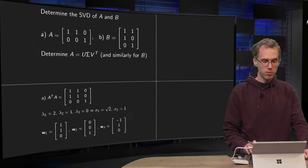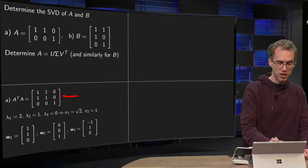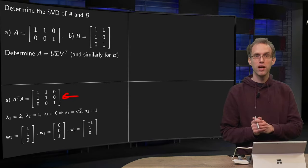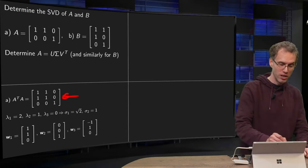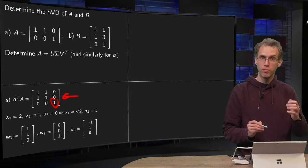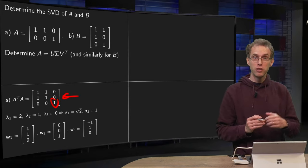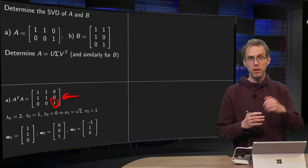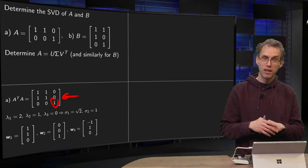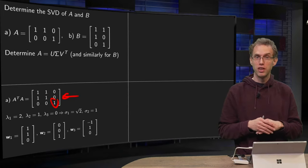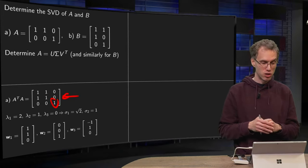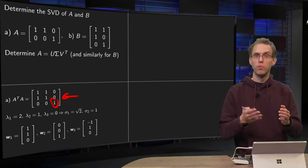So what do we need to do? First compute A transpose A. Well, you can do that yourself, and then you need the eigenvalues of A transpose A. Well, you already see the 1 sitting here, so 1 will be an eigenvalue. You see two rows are the same, so the matrix will have a zero eigenvalue. So you know 1 and 0 are eigenvalues, and then you can use the trace to compute the third, which is 2. So eigenvalues are 2, 1, and 0.